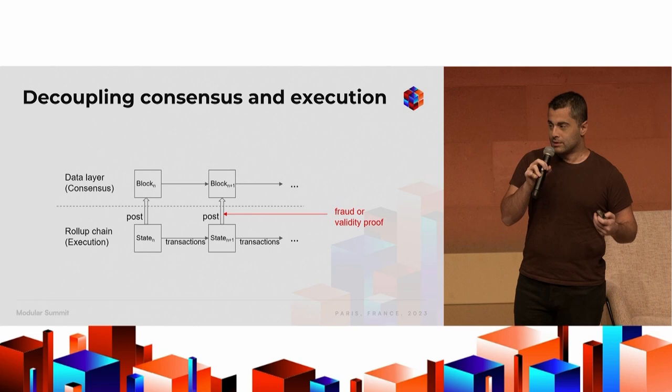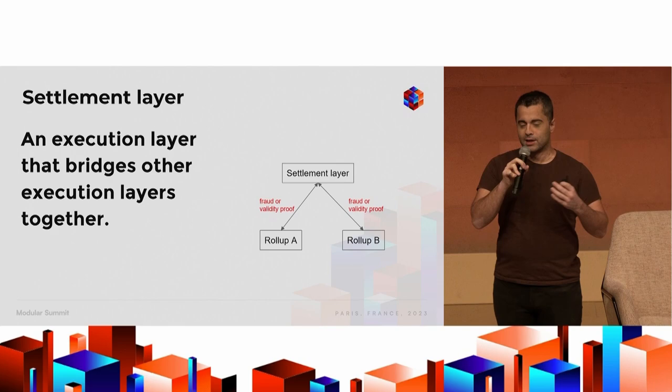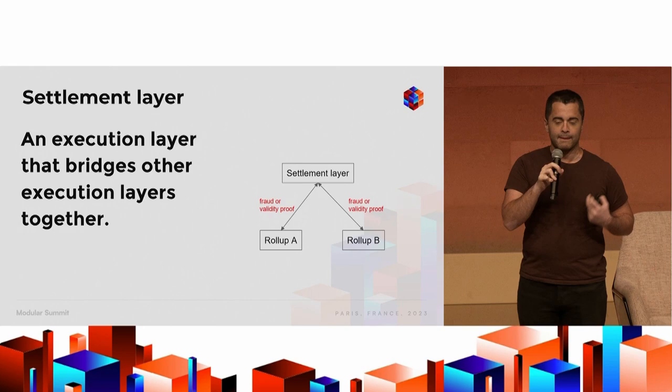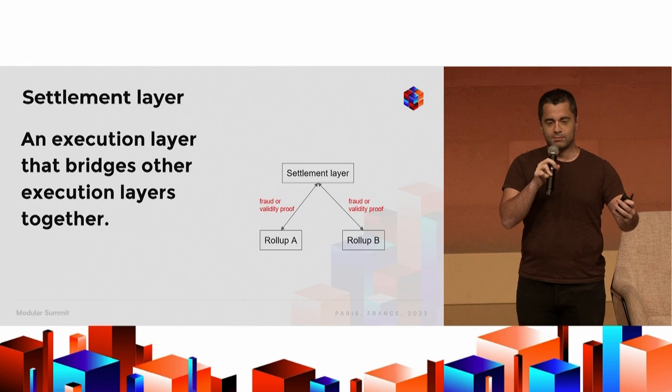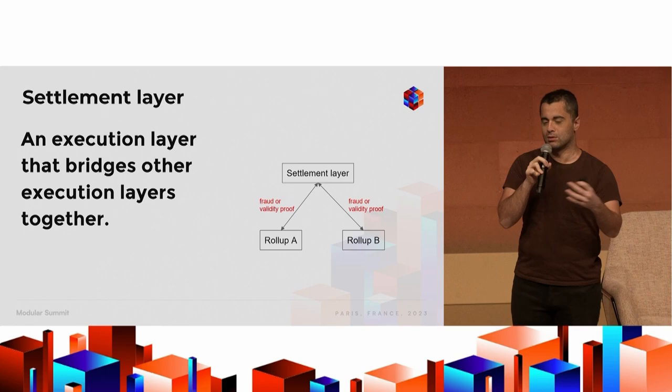In the modular blockchain model, the consensus and execution layers are decoupled. Then you have the settlement layer, which is basically a special case of an execution layer used to bridge other execution layers or roll-ups together. For example, if you look at Ethereum as an execution layer, you have on-chain light nodes for roll-ups on Ethereum which act as bridges between roll-ups and Ethereum — they can bridge assets and verify fraud proofs or ZK proofs by accepting block headers from the roll-up.